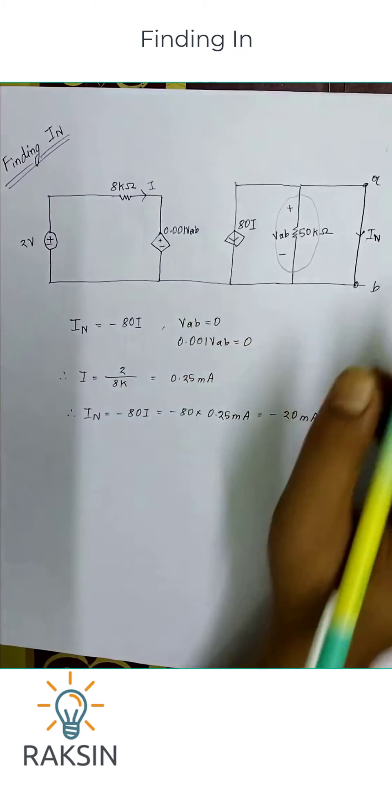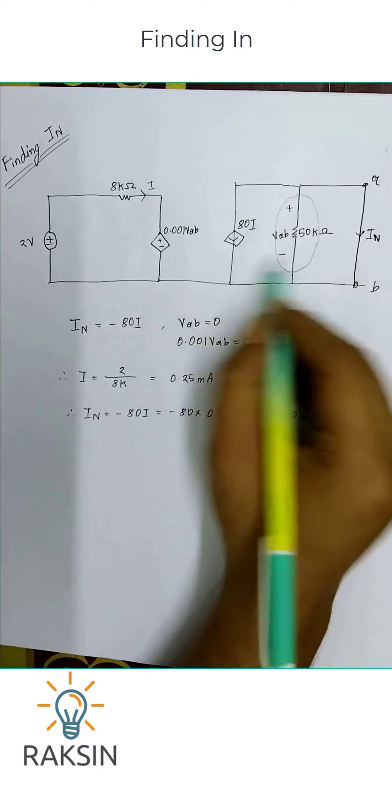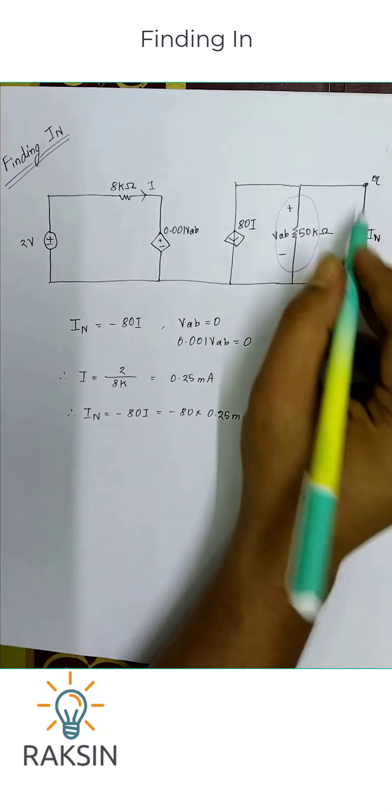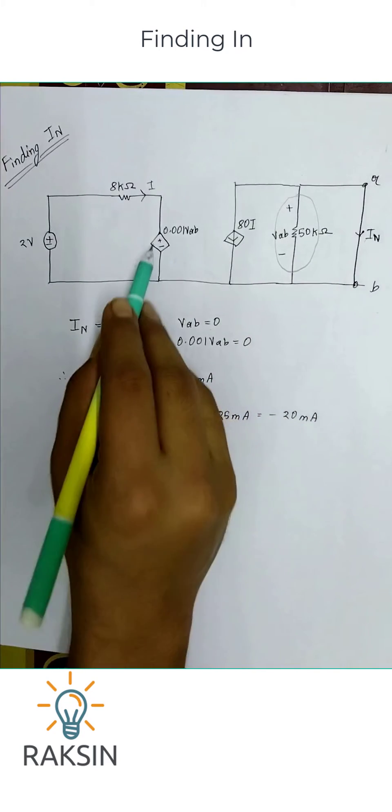So you can say In is minus 80I, as the directions are opposite, and V_ab is 0 volt as this line is shorted. This will be 0 divided by 2. As V_ab equals 0, now this I...